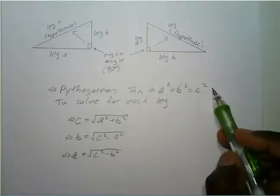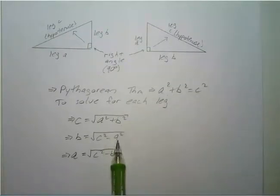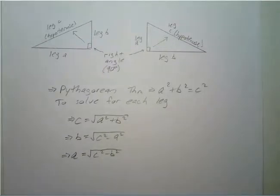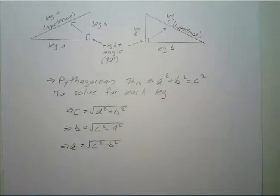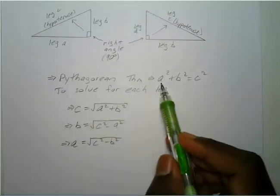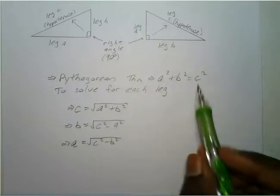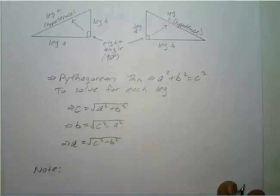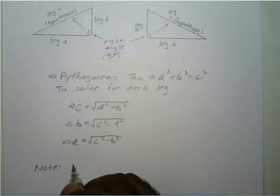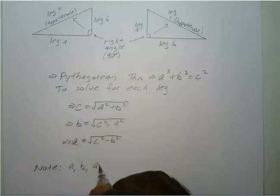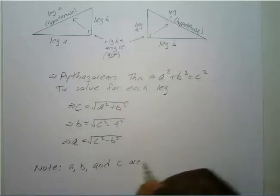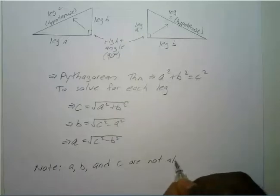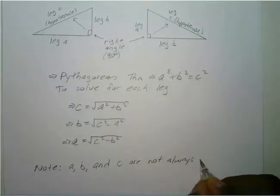This is your Pythagorean theorem, and this is how you will solve for each individual leg. Now a quick note: they don't always use A, B, and C. A, B, and C are not always used.